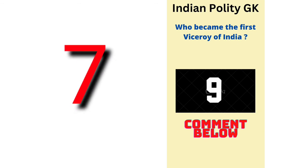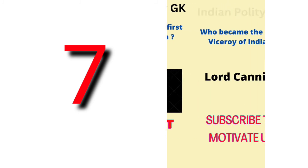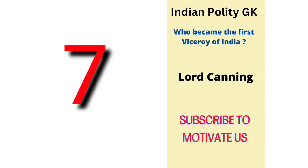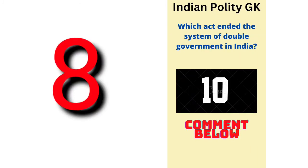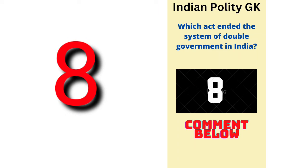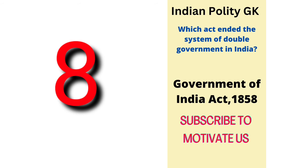The question is: who became the first Viceroy of India? Lord Canning became the first Viceroy of India. The question is: which act ended the system of double government in India? The answer is the Government of India Act 1858 ended the system of double government in India.